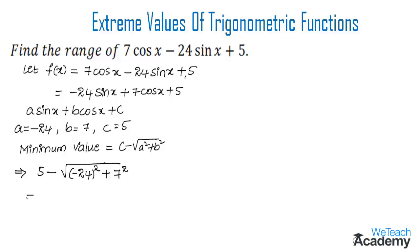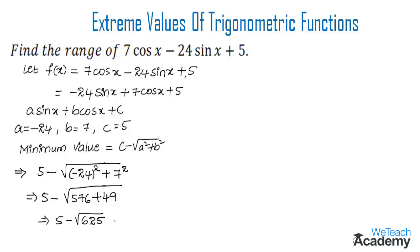(-24)² = 576, and 7² = 49. Adding: 5 - √(576 + 49) = 5 - √625 = 5 - 25 = -20. So the minimum value is -20.